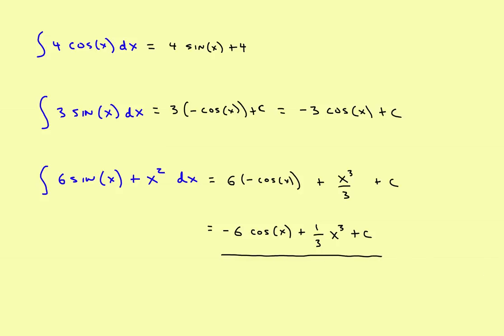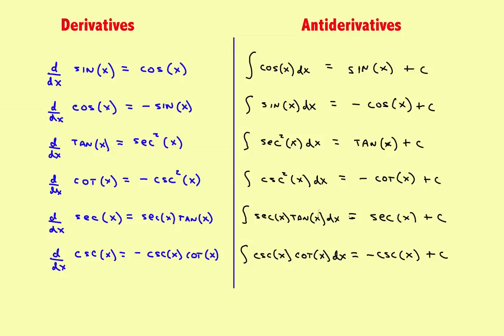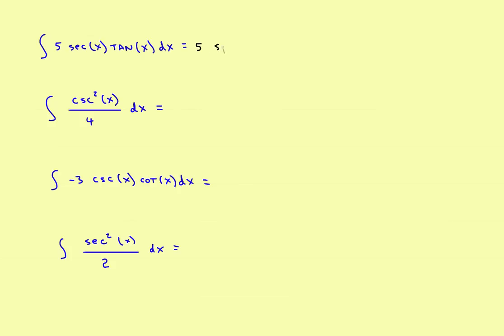Next, you've got the constant 5. You need the antiderivative of secant tangent — going back to your list, the antiderivative of secant tangent is secant. So this becomes 5 times secant of x plus c, and you're done. The antiderivative of secant tangent is secant.